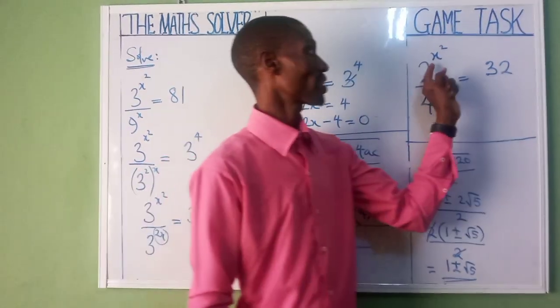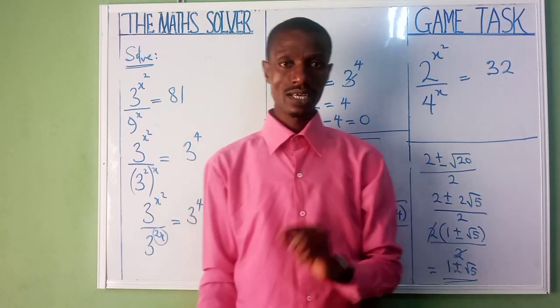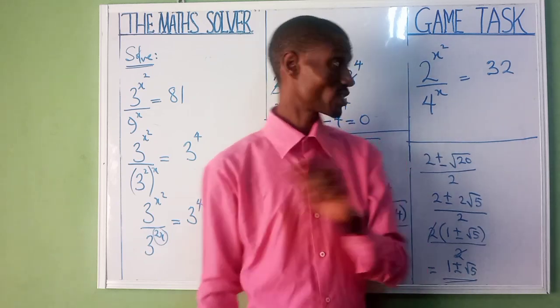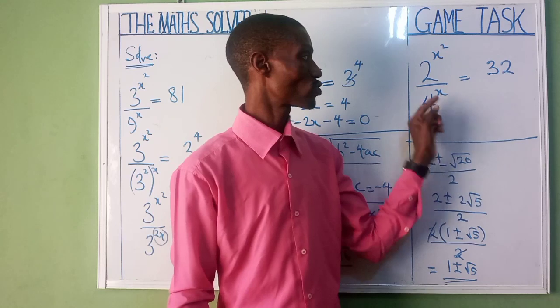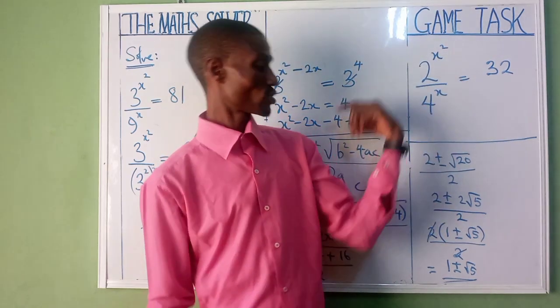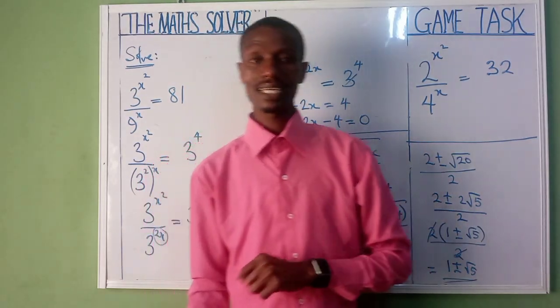Now this is going to be our game task. 2 raised power of x squared divided by 4 raised power of x equal to 32. If I may ask you, what base are you going to use here? Base 2, very good. We are using base 2 because it is 2 that can go here. As soon as you write it, bring it up, put minus in front of it. It will lead you to some questions. Solve your answer if you like, solve it in surd form if you like in decimal.